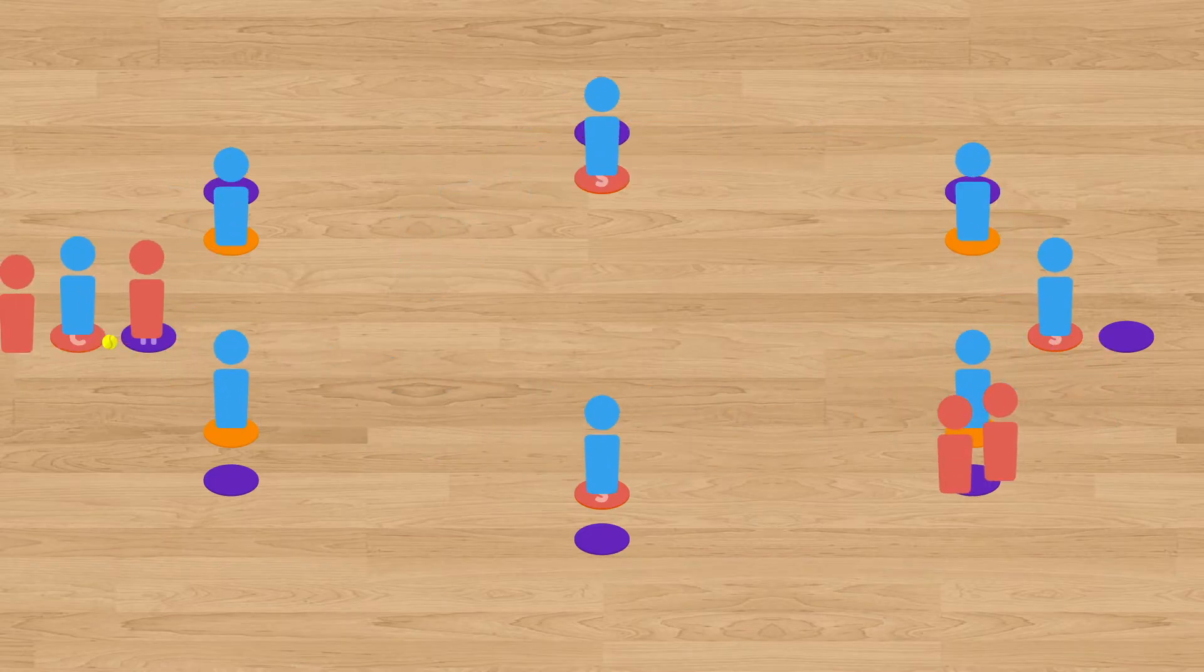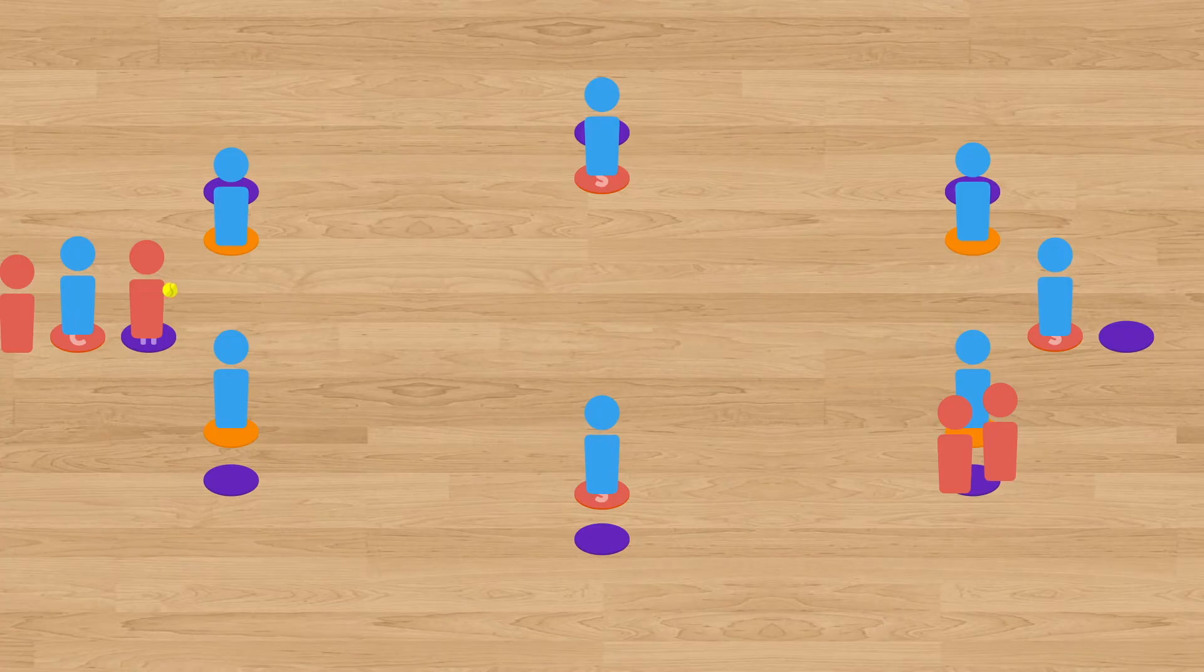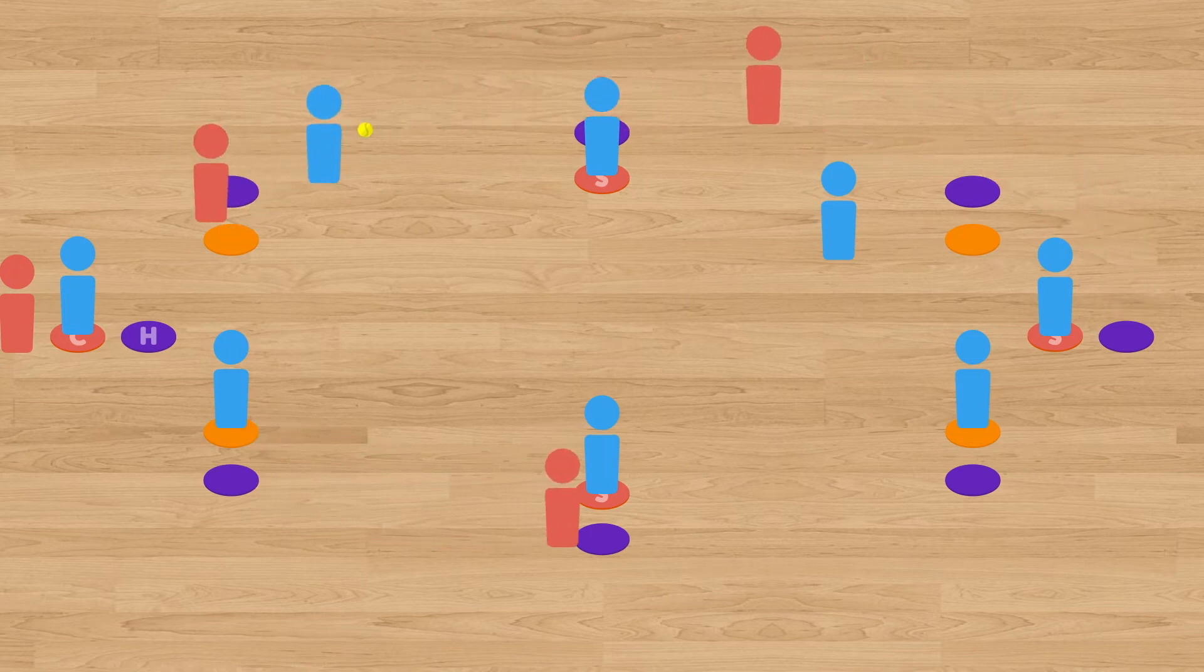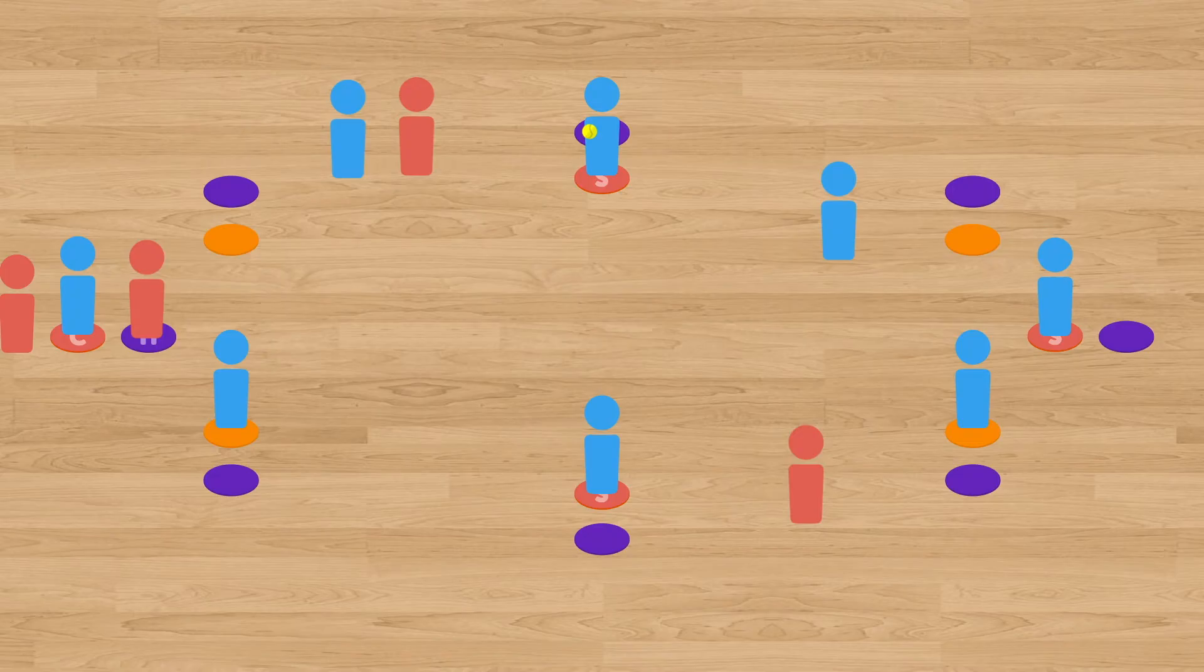Play goes on like this with the batting team players attempting to make their way around all of their bases so they can get back home and score a point for their team, while the fielding team is trying to quickly field the ball to a stop spot to prevent the batting team from scoring. Once every player on the batting team has had a turn to throw the ball, the teams switch roles.